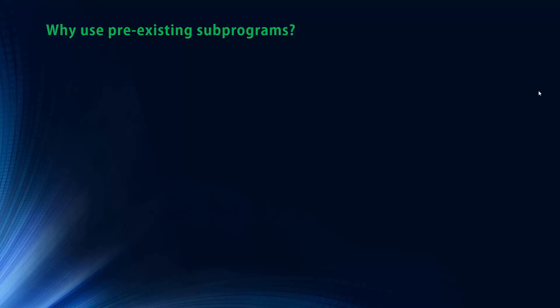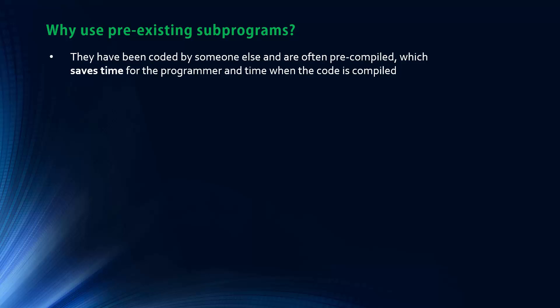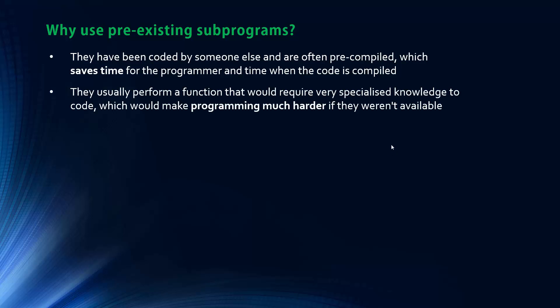Why should we use pre-existing subprograms, specifically libraries? First, they've been coded by someone else and are often pre-compiled, which saves time for the programmer. They also perform functions that are very specific and often require specialised knowledge to code, making programming much harder if they weren't available. Can you imagine having to program a print statement yourself? So essentially it saves time and makes things easier.